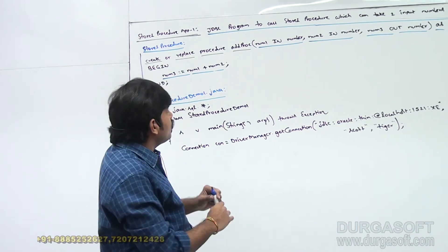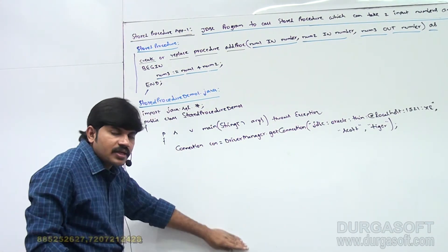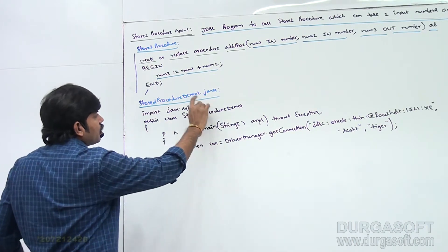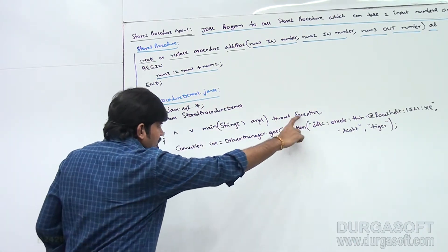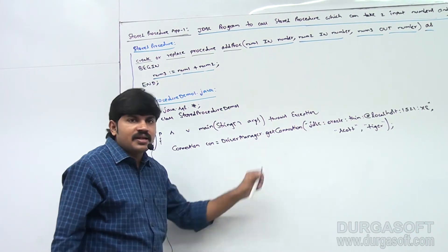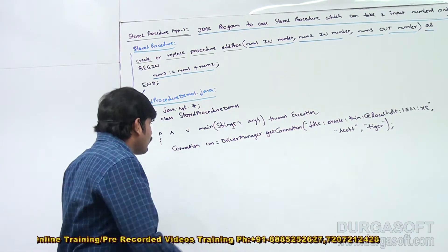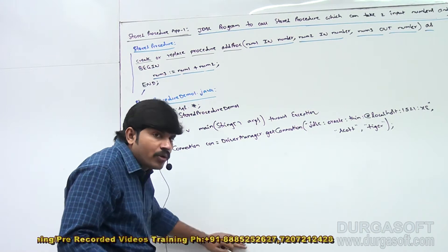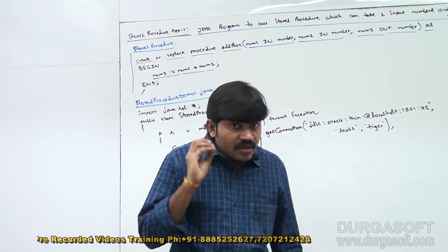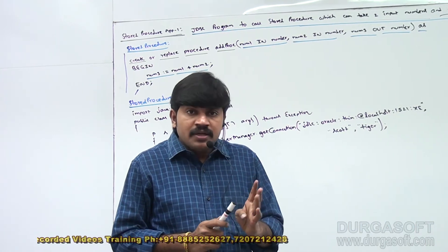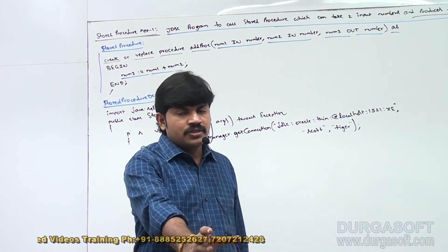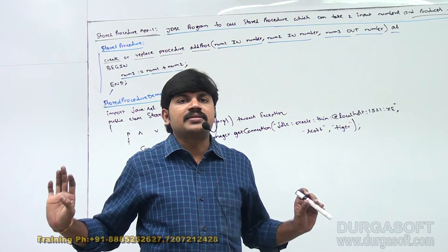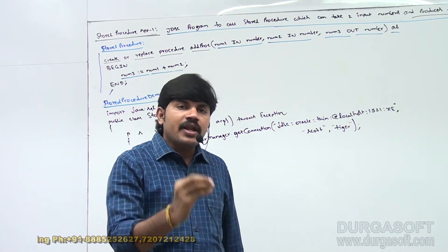Now to call this stored procedure I want to write a Java program. The template is: import java.sql.*, public class StoredProcedureDemo1, main method, Connection con = DriverManager.getConnection(). The stored-procedure-specific steps are: first, create a CallableStatement object; next, for every IN parameter set the values; for every OUT parameter register with the JDBC type; then execute and get the result.